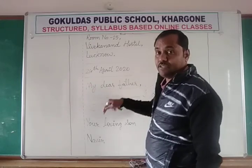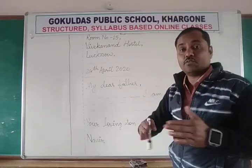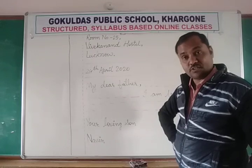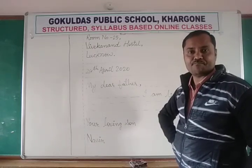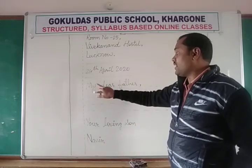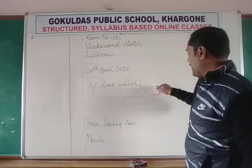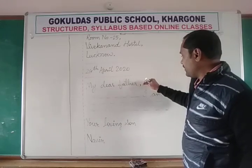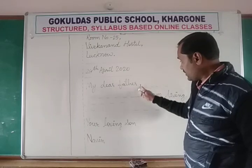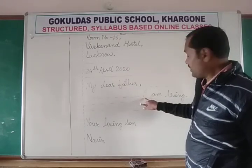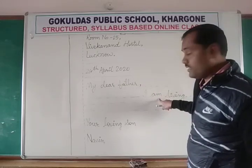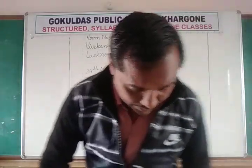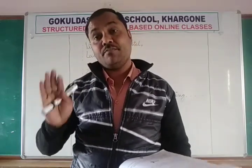This is called salutation — how you greet the person to whom you are writing the letter. Suppose you are writing to your father. In an English letter, we write: 'My dear father,' with a comma. Then leave that line blank and come to the line below. Just where 'father' ends, start your new paragraph below with a capital letter.